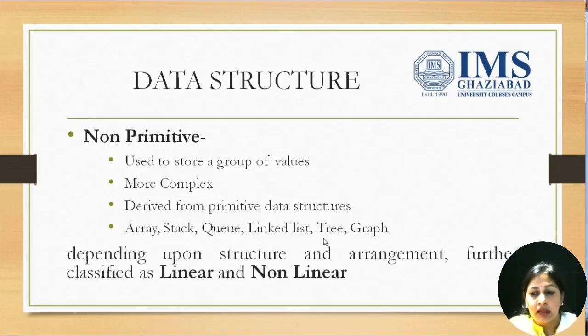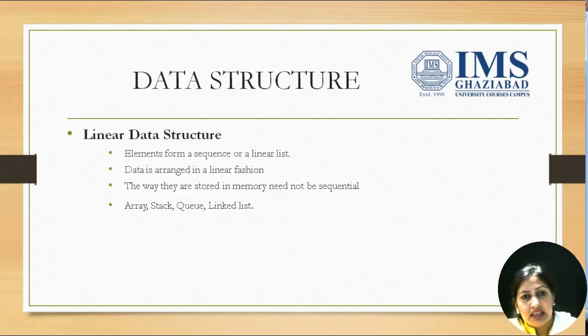Now, depending upon structure and arrangement, non-primitive data structures are categorized as linear and non-linear. Linear data structures are those whose elements form a sequence or a linear list. That means data is arranged in a linear fashion.